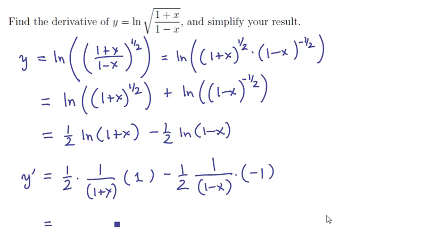So if we clean up the individual terms, we're going to have 1 half times 1 over 1 plus x. And then we'll have minus, minus, so positive, 1 half times 1 over 1 minus x.